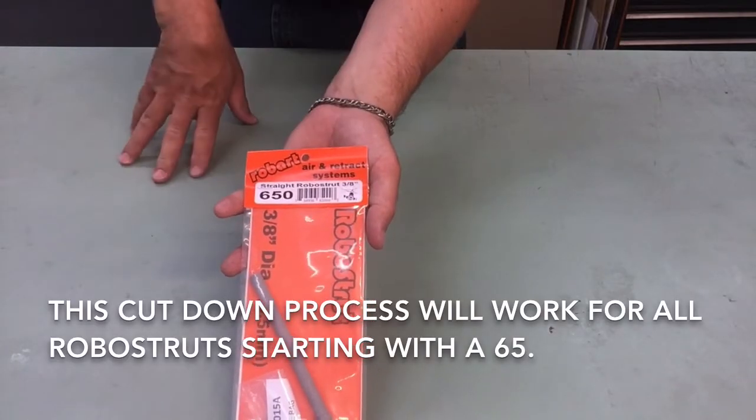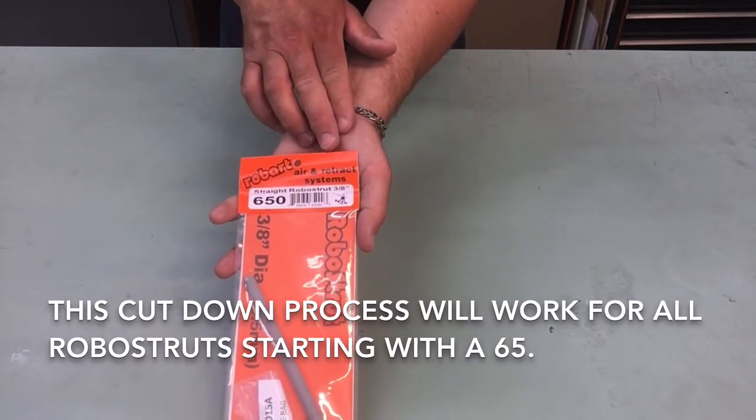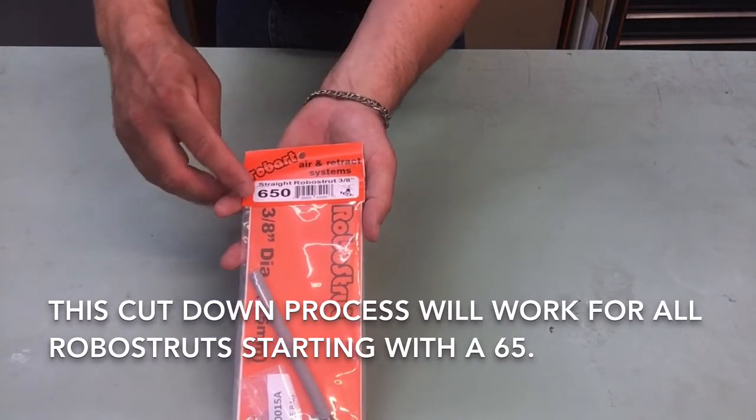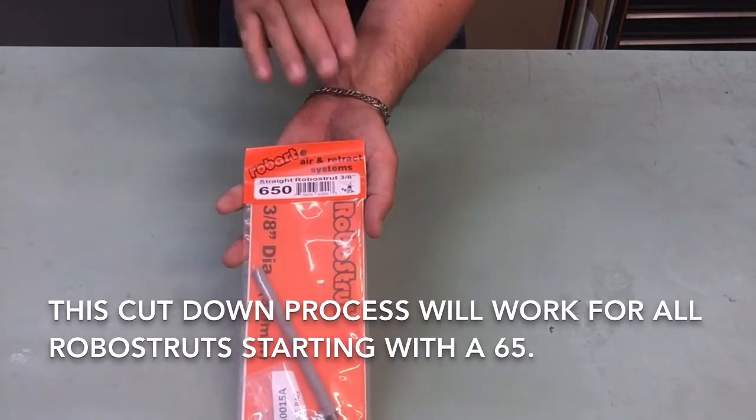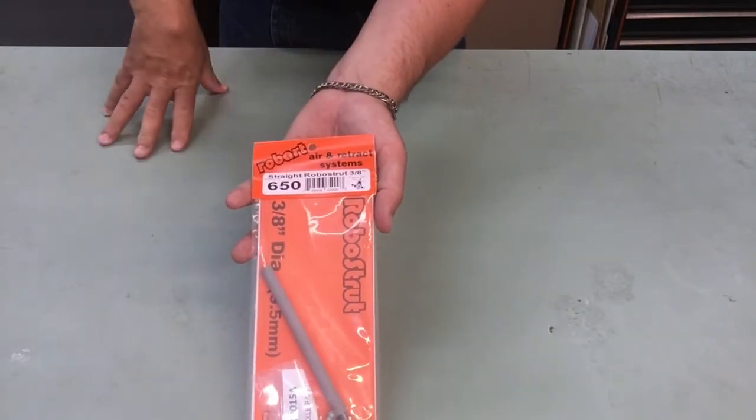So what I have here is part number 650 and this is the 3 1/8 inch diameter Robo Strut. Any of our Robo Struts that start with the 65, that's going to be our 3 1/8 diameter. So let's go ahead and open this up and let's talk about cutting these down.